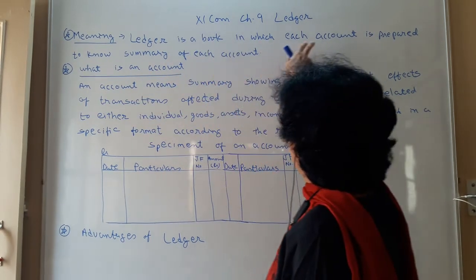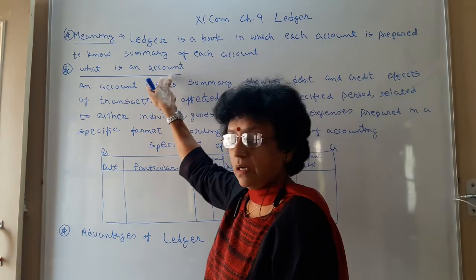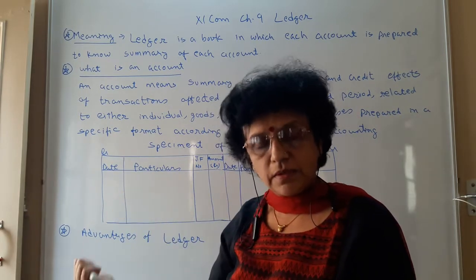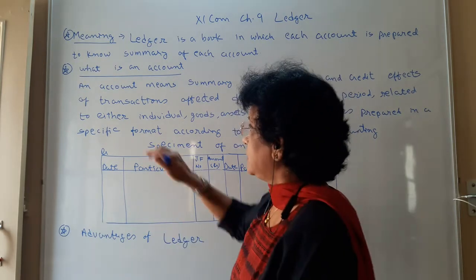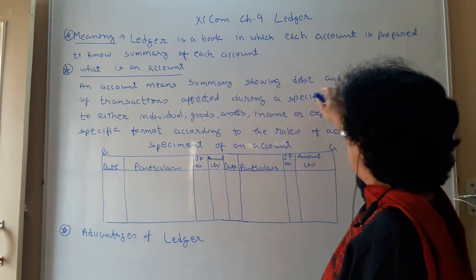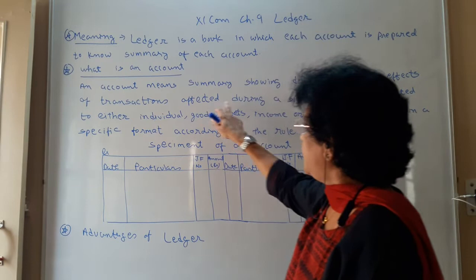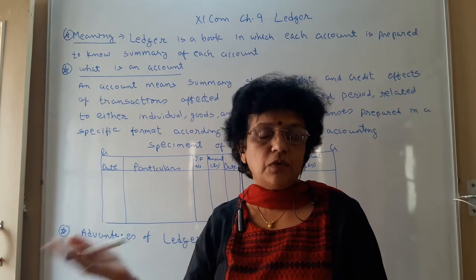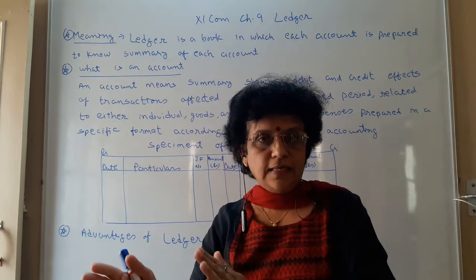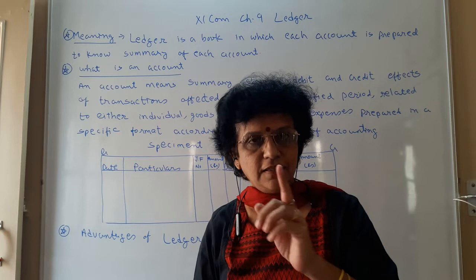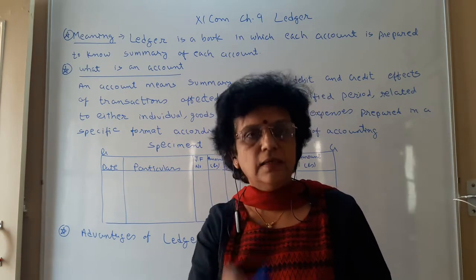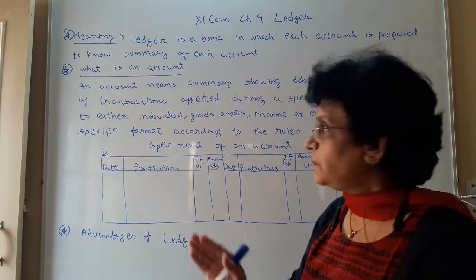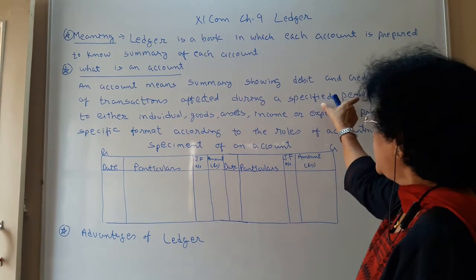Next, we have used the word 'account,' so you must know what an account is. If you remember when we learned accounting terminology, this word was already explained. Let us recapitulate: An account means a summary showing the debit and the credit effect of transactions effected during a specified period. You have already learned one account — in the cash book, you used to have the debit side and credit side and post all transactions related to cash. Here we are simply recapitulating and reframing the words — recording the debit and credit effect for a specific period.